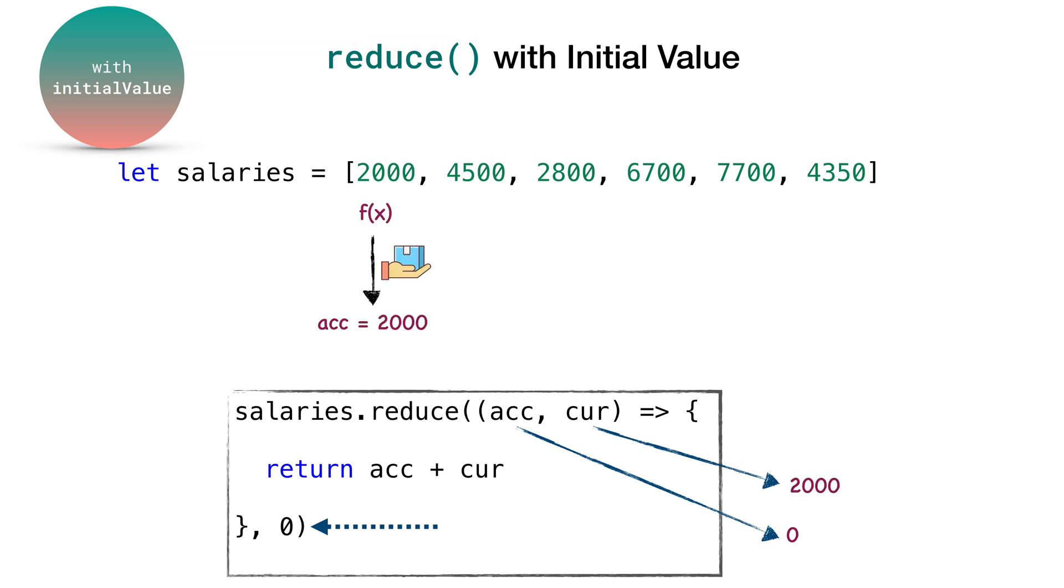Now this time, execution of the reducer function starts from the first element in the array. It calculates and returns the sum of accumulator and current value which is 0 plus 2000.